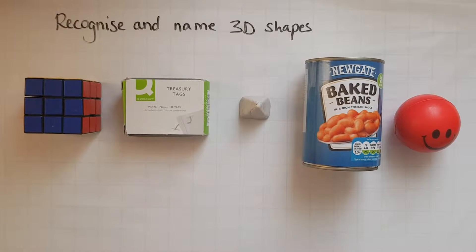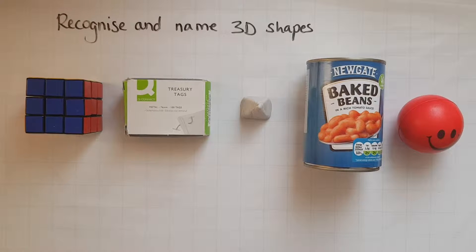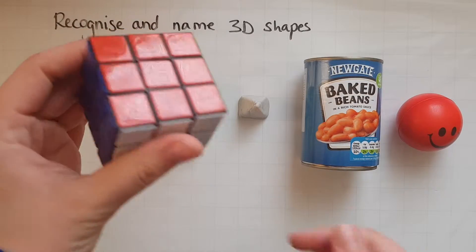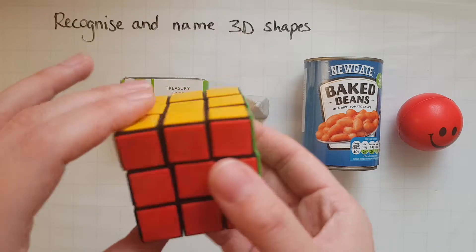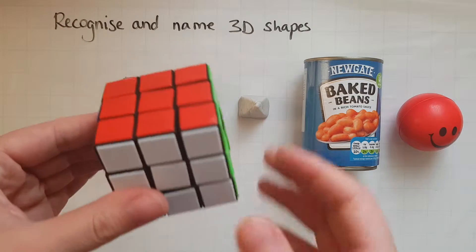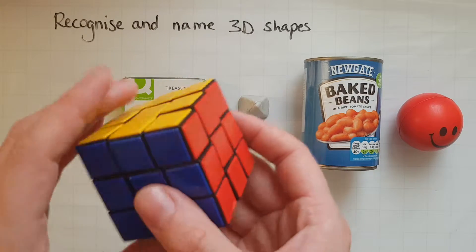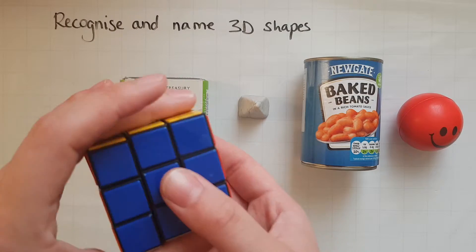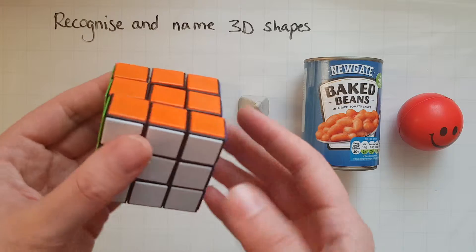In this video we're going to recognise and name 3D shapes. At entry 1 we looked at one 3D shape which looks like this, and we call that a cube. So this is a Rubik's cube, and the name of the shape is actually a cube, like the sugar cubes, like the ice cubes.